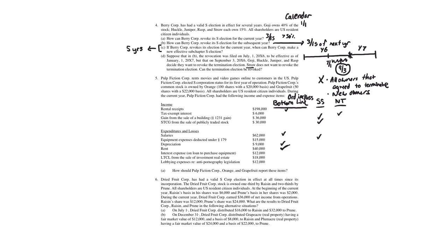Interest expense is a little tricky — you need to look at what the loan deals with. Since this loan deals with business activity, it is bottom-line. Note that Section 163J limitation applies at the business level. However, if the interest expense were on portfolio activity, it would be separately stated, because investment interest expense is limited to investment interest income at the taxpayer level. Long-term capital loss: capital losses are always separately stated due to capital loss limitations. Lobbying expenses are always non-deductible.